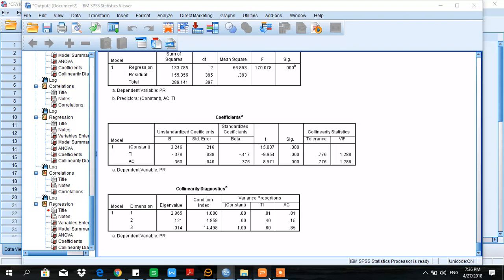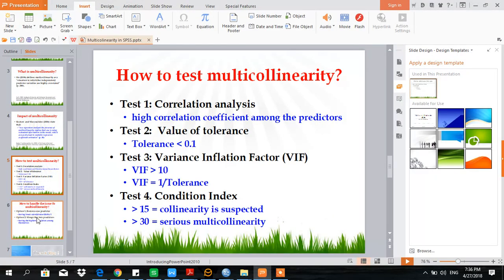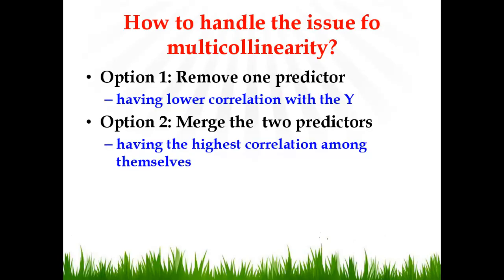We can also look at how to resolve the issue of multicollinearity. At the moment we are sharing two options: one option is to remove one predictor, and the second option is to merge two predictors. Another option is to use a...